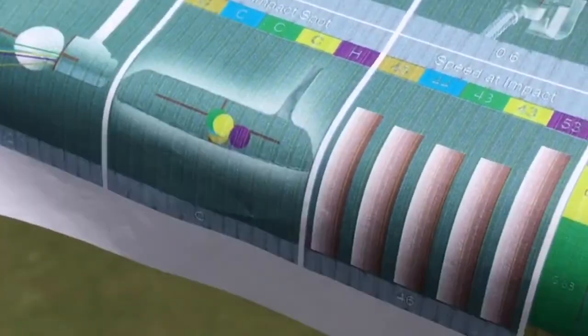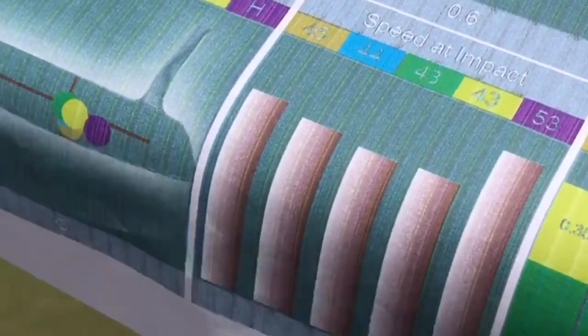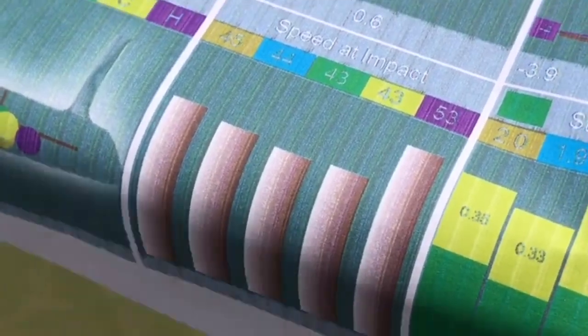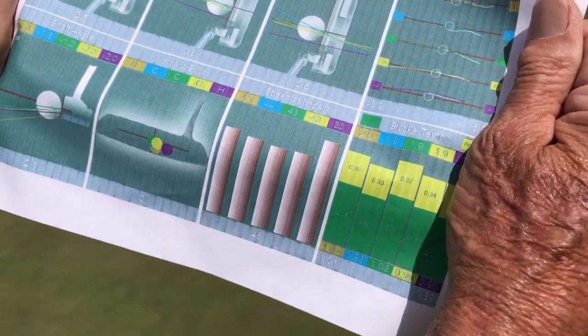The speed of the putter. You want constant speed back and forth. You want to be able to putt five or six putts in a row where the speed is consistent.